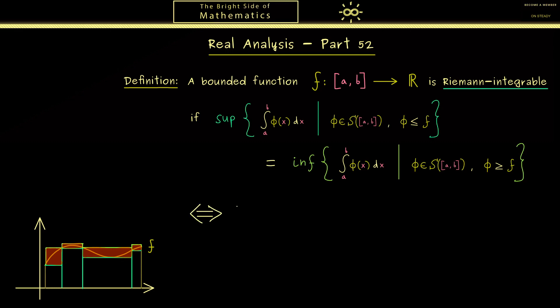Namely for all epsilon greater than zero we find step functions φ and ψ with the property that the one lies below f and the other one above f. And moreover we have that the difference between both integrals here is less than the given epsilon.